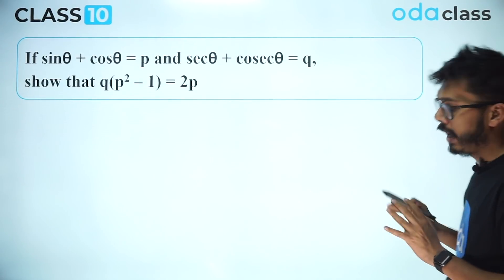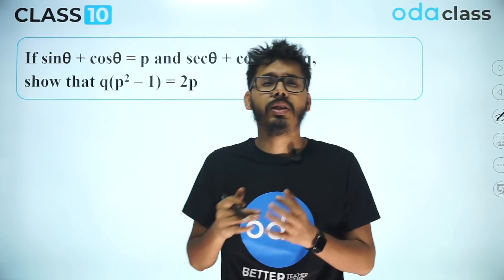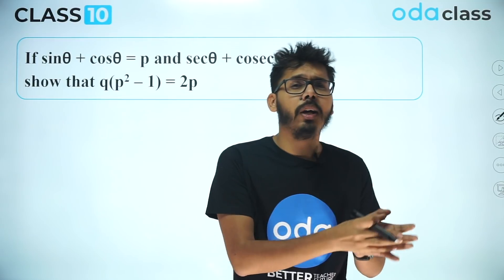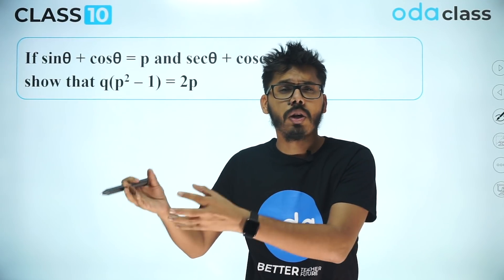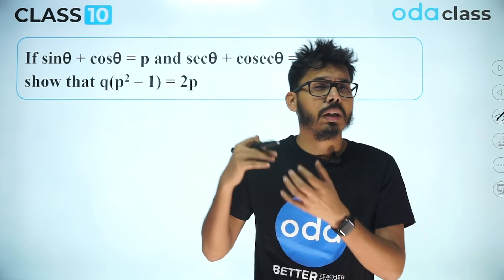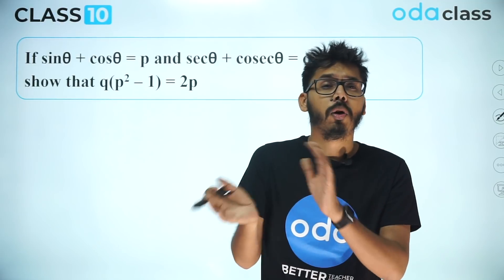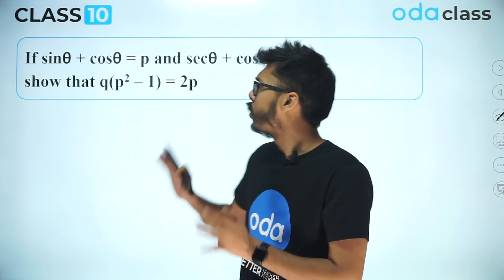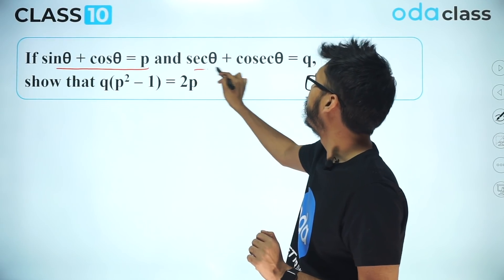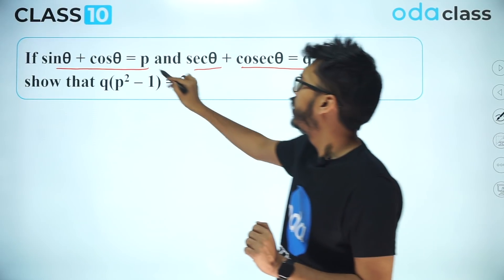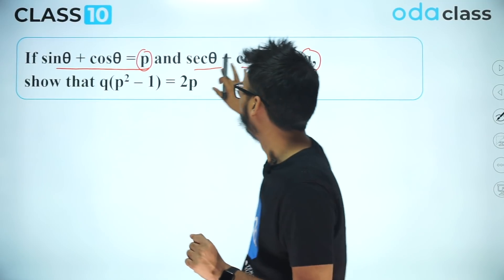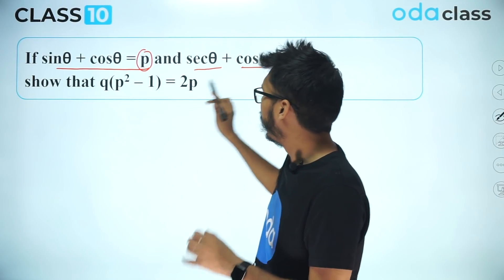For the next question I have a very useful problem that appears again and again in board exams. It involves sinθ + cosθ given as one value and secθ + cosecθ as another value, asking for a relation between them. Here: sinθ + cosθ = p, secθ + cosecθ = q, and we need to develop a relation between p and q.